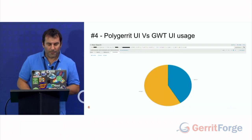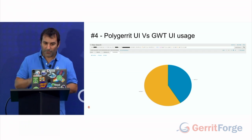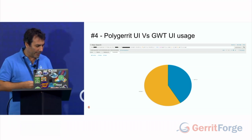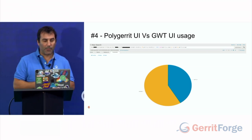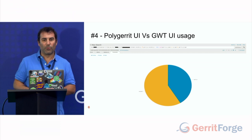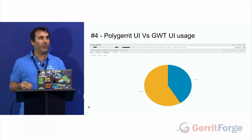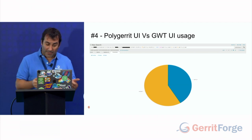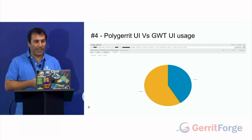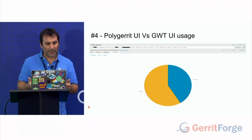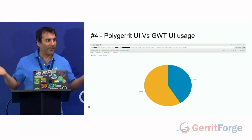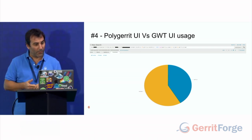Number four is the PolyGerrit UI versus old UI usage. That's really important because, as Luca was mentioning when he talked about migration, something he skipped is the communication to your clients and users. You need to tell users which new features are coming in. For example, when you migrate from Garrett 2.16 to Garrett 3.0, the old UI is gone — you can't use it anymore.